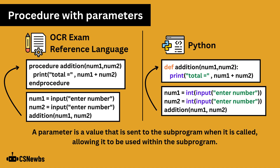A parameter is a value that is sent to the subprogram when it is called, allowing it to be used within that subprogram. In this example there are two parameters, num1 and num2, that are sent when the procedure addition is called and can be used within that procedure.